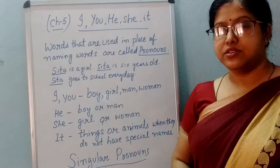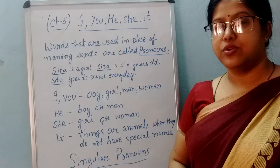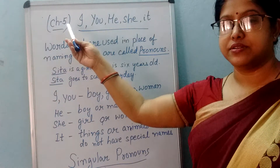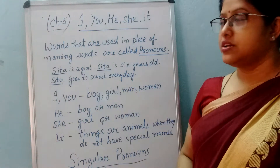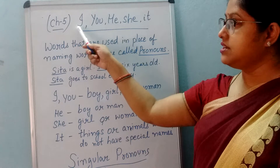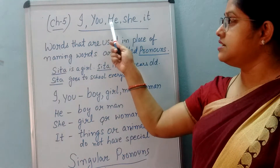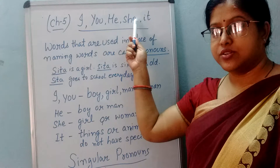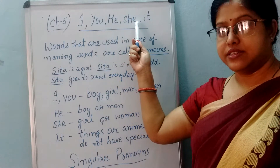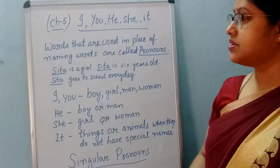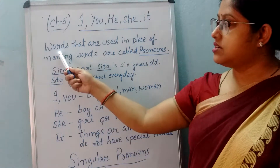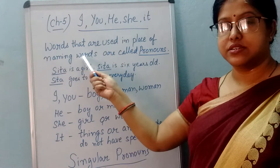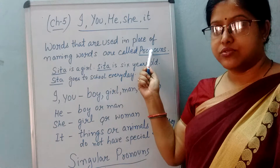Good morning children. Today I am going to teach you chapter 5 of English Grammar. The topic is I, you, he, she, it. So what are they? Let's learn about that. Words that are used in place of naming words are called pronouns.